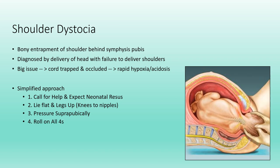Step four: roll the woman onto all fours and re-attempt to deliver the anterior or posterior shoulder first. I'm often asked how you get a heavily pregnant woman who has almost entirely delivered a baby after a long labor to roll on all fours. The truth is, if you clearly say 'I need you to roll onto all fours, I need to get your baby out right now,' they just flip over.